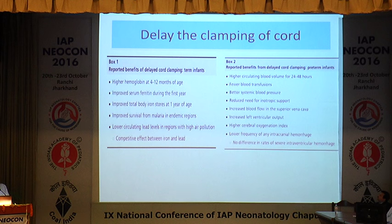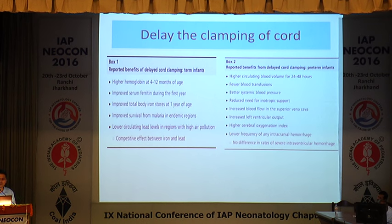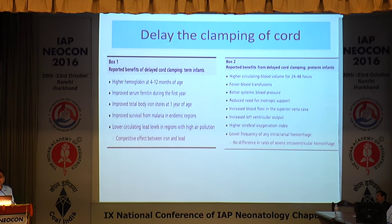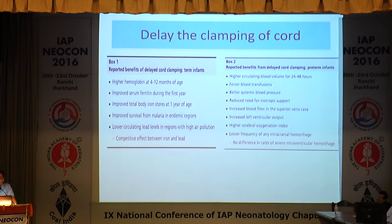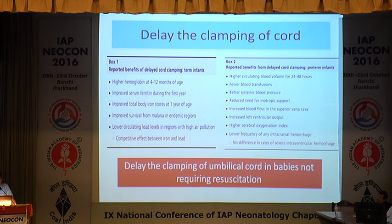To be noted in the first minute itself is delayed cord clamping. The American Academy of Pediatrics recommends it, and European bodies recommend it as well. Delayed cord clamping has been shown to lead to higher hemoglobin at 4 to 12 months of age, improved serum ferritin during the first year, and improved total body iron stores. It is helpful both in term infants and in preterm infants. In preterm, it has been shown that less blood transfusion is required during NICU stays. Delayed cord clamping is recommended for babies as preterm as 24 to 25 weeks. No side effects like IVH, EBL, or polycythemia have been noted. Better control of blood pressure and ventilation is seen with delayed cord clamping.